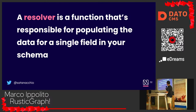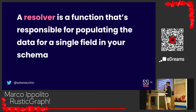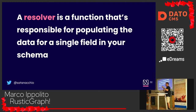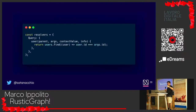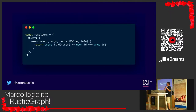The resolvers are the actual functions responsible for populating the data that you query from the client. On the client you ask for the list of developers; the resolvers go to the database or a third-party API, retrieve that data, and send it back to the client. This is what a resolver looks like: when you ask for users, it returns all users based on the ID you passed.